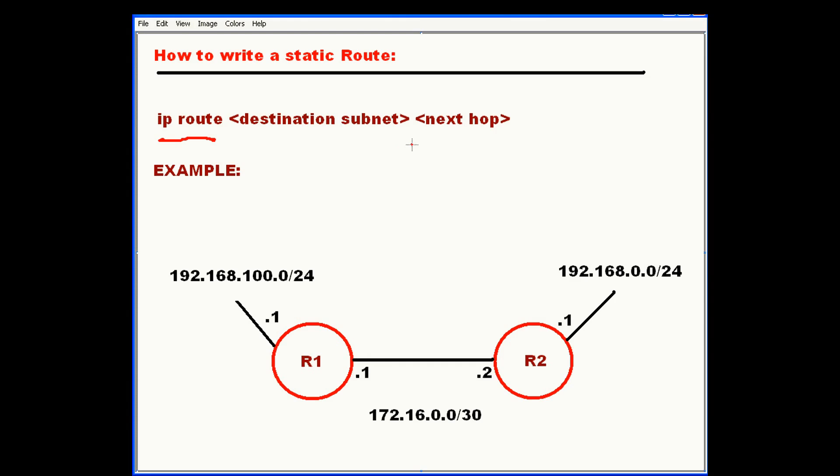And then this next portion is the directly connected IP address that you're going to forward that traffic to. An example of traffic coming in on this side of the router destined for this subnet will look like the following command.